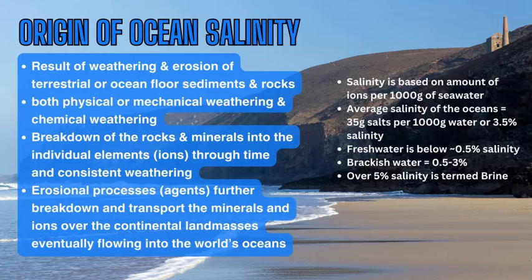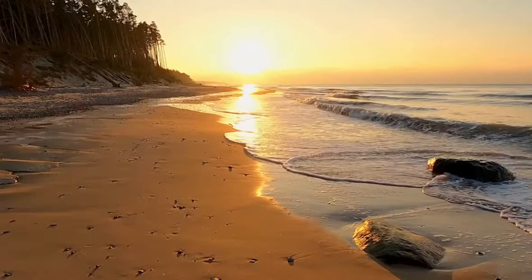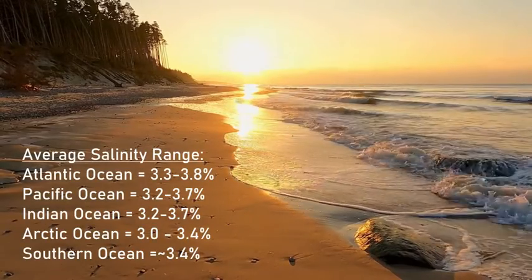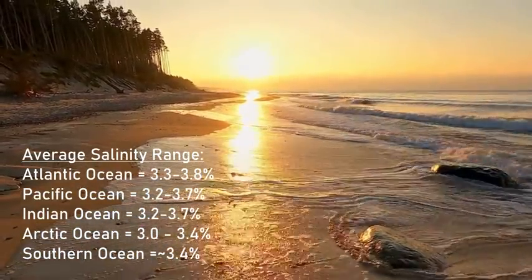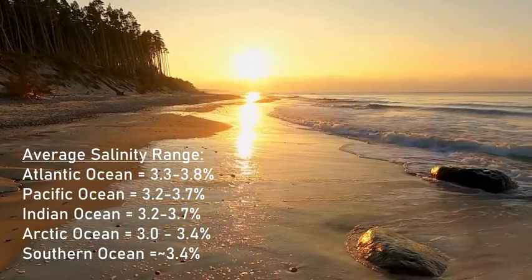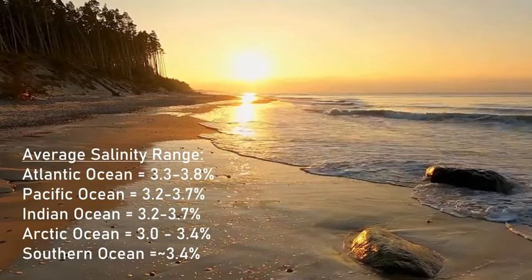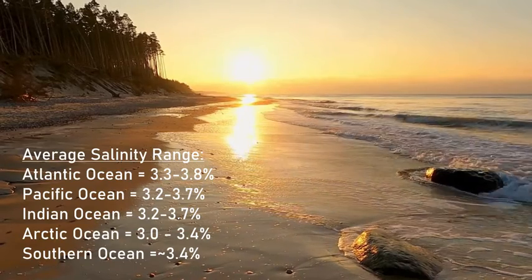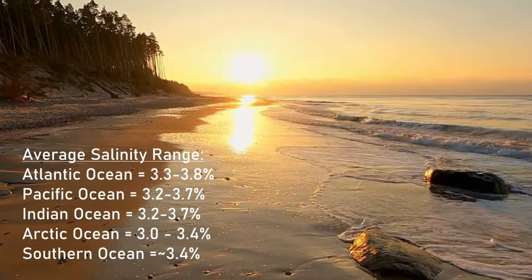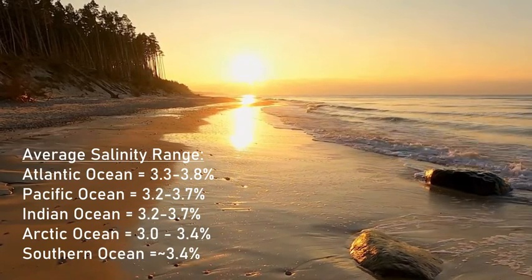Freshwater is around 0.5% salt, versus the average ocean salinity of around 3 to 3.5%. This does vary based on location, latitude, and climate, but the average is around 3.5%. For example, the Atlantic ranges from 3.3 to 3.8%, the Pacific 3.2 to 3.7%, the Arctic a little less at 3.0 to 3.4%, the Indian roughly the same as the Pacific at 3.2 to 3.7%, and the Southern Ocean around Antarctica is around 3.4%.